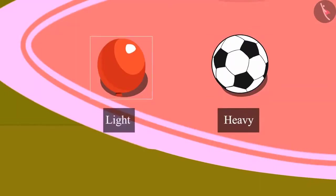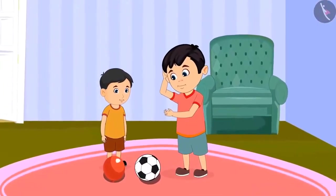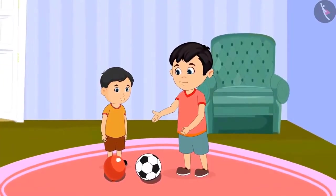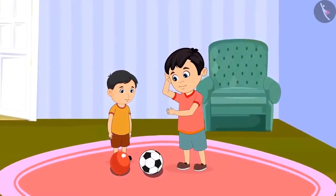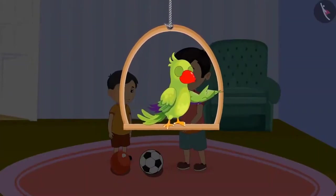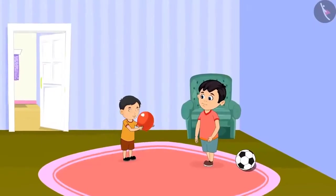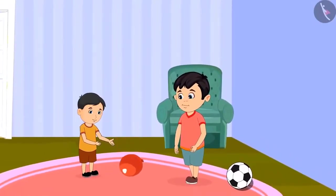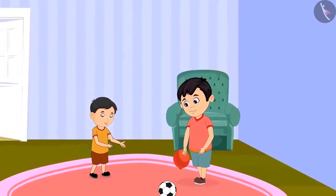Chotu cannot understand — the size of the ball and the balloon are the same, but how did the ball become heavier? This shows that it is not always necessary that objects that look the same should be of the same weight. The balloon was light, so Chinoo lifted it. But the ball was heavy, so Chinoo was not able to pick it up.